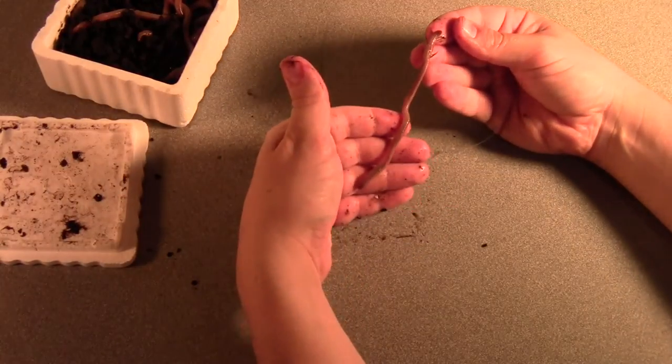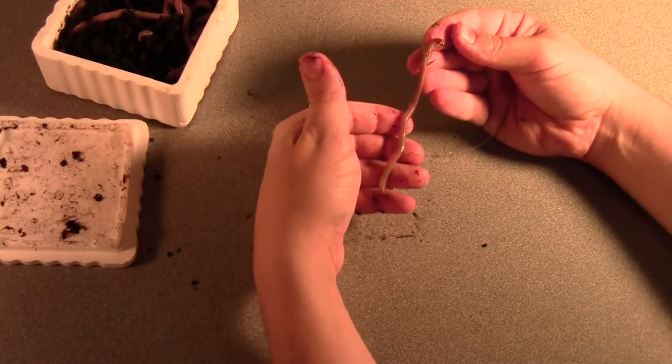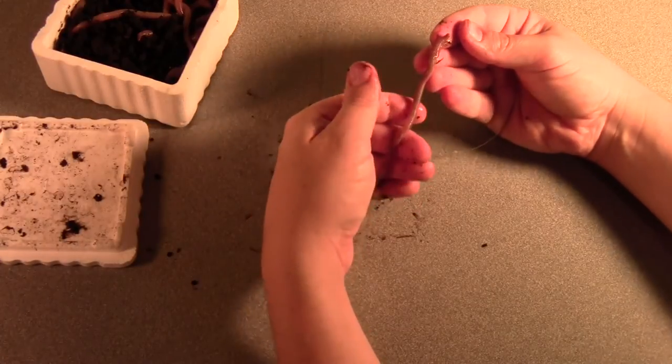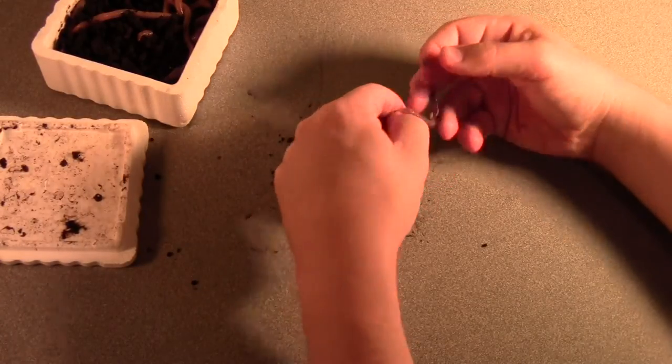Now you could leave the entire worm on the hook. If I was fishing for bass I might do that, but since I'm fishing for bluegill I'm going to go ahead and just pinch the worm in half.